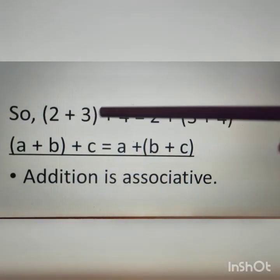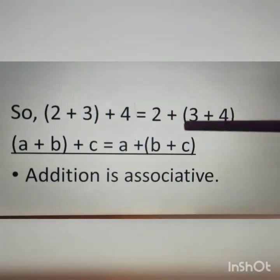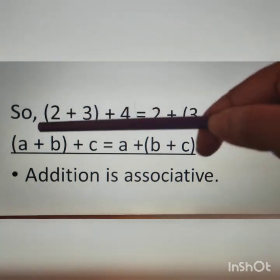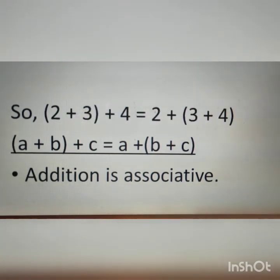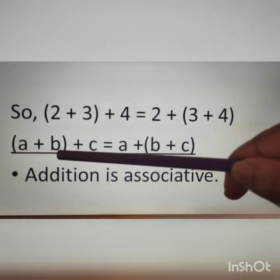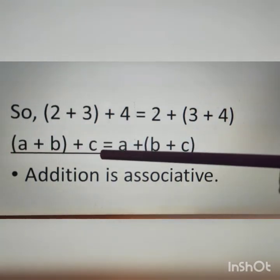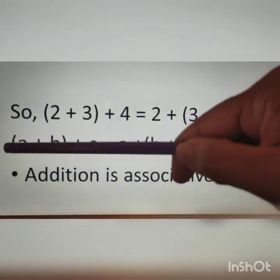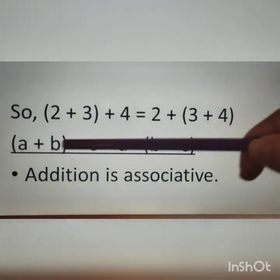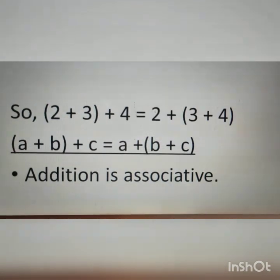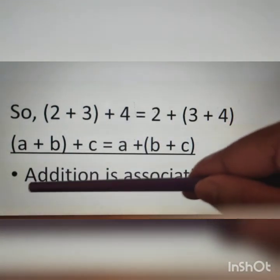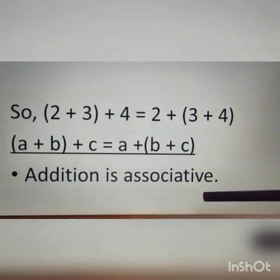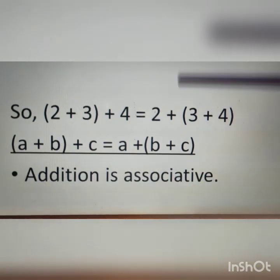Therefore we can write (2 + 3) + 4 = 2 + (3 + 4) — only the brackets are interchanged and the values remain the same. In general, (a + b) + c = a + (b + c), where a, b, and c are any whole numbers. Therefore we can say addition is associative, and this property of whole numbers is called the associative property.